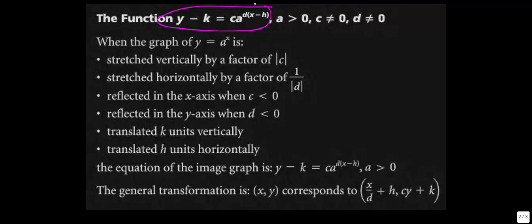I've given you a list of different transformations — everything is very similar to what we've seen before, only that our function is exponential. For example, when the c value is less than 0 it gets reflected in the x-axis. When the d value is less than 0, you get a reflection in the y-axis. Hopefully these things look familiar from when you were first introduced to functions back in Unit 3.